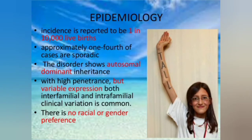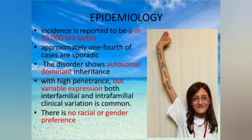Epidemiology: Marfan syndrome occurs in one in 10,000 live births. It is generally considered autosomal dominant with high penetrance but variable expression — both inter-familial and intrafamilial clinical variation is common. There is no racial or gender preference, so Marfan syndrome can occur in males and females of any race equally.